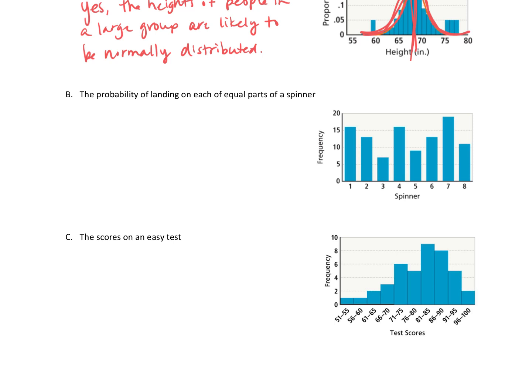So we would say that this is not normally distributed. Meaning it does not have a normal distribution. The reason for that, each outcome of a spinner has the same probability of occurring as any other outcome.